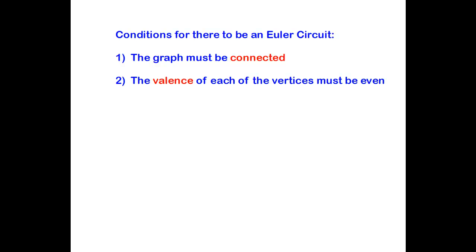All right, we're going to look at Euler Circuits today. This is Chapter 1 in my discrete math for all practical purposes. So, first, conditions for there to be an Euler Circuit: the graph must be connected, and the valence of each of the vertices must be even.